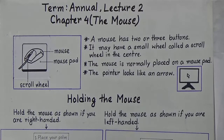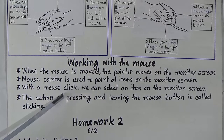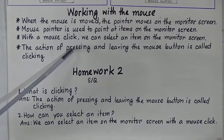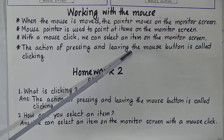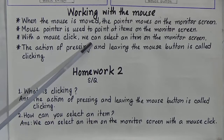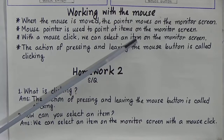Gently press the mouse button and then release it. At that moment you will hear a sound called a click, and this action is called clicking. The action of pressing and releasing the mouse button is called clicking. To select an item on the monitor screen, take the mouse pointer on that item, press the left mouse button, and release it. You will find a rectangular shape appearing on the selected item.